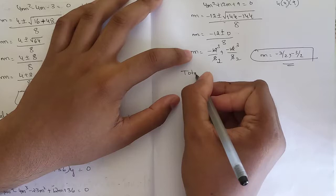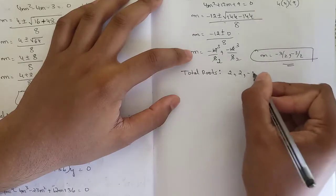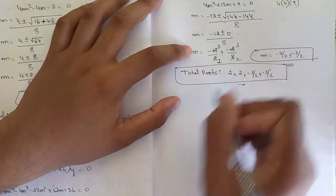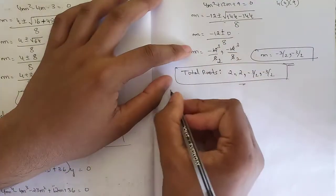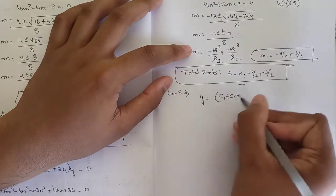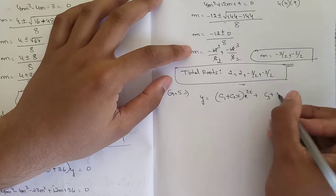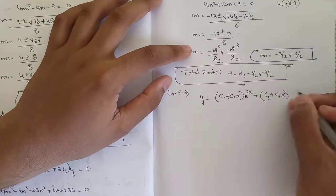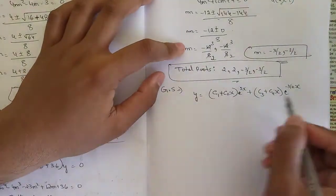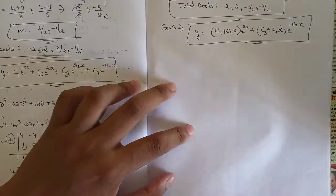The total roots are: m = 2, 2, −3/2, −3/2. Since 2 repeats twice and −3/2 repeats twice, the general solution is: y = (C₁ + C₂x)e^(2x) + (C₃ + C₄x)e^(−3x/2). This is the required general solution.